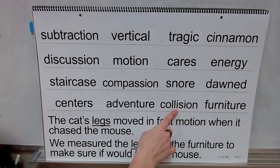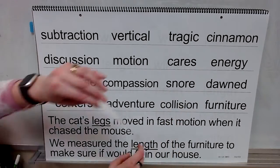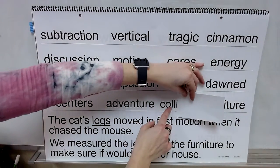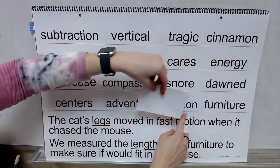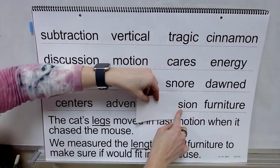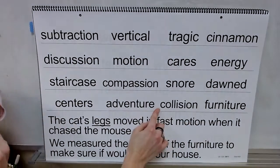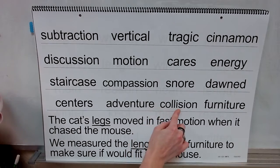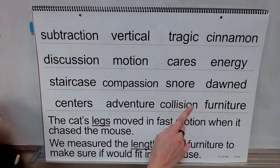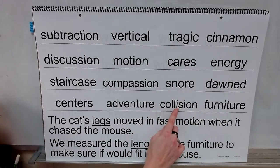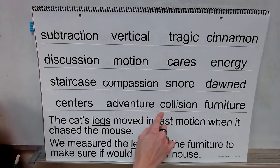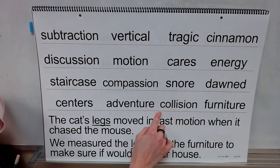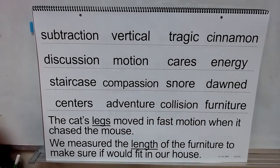We're going to be flexible here. Syllable: 'cole'. Syllable: 'lie'. Syllable: 'jeun'. Try to blend that — collision. Let's be flexible here and change this to a short vowel. Blend it again — collision. Word: collision.